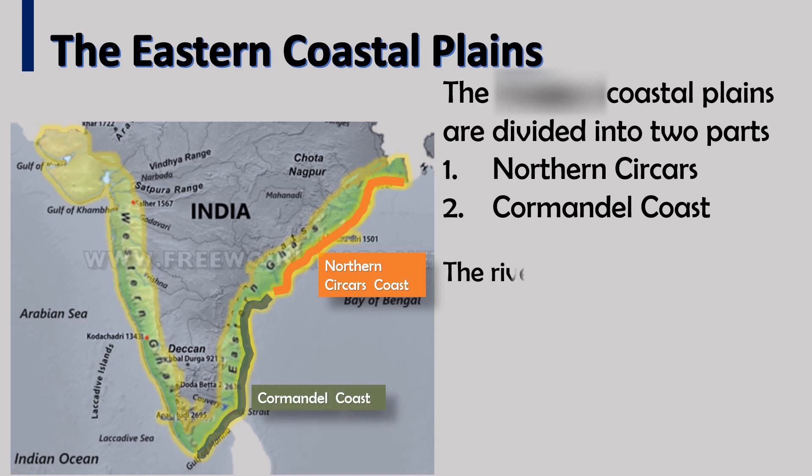Rivers like the Godavari, Krishna, Kaveri, and Mahanadi flow through the eastern coastal plains.